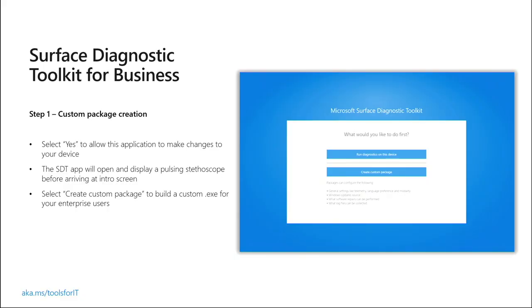If there's only a specific set of troubleshooting steps that you know or think you need to run, what's great about the SDT for Business is that we now allow you to create custom packages so that you can be very prescriptive with which troubleshooting steps you want to go through. You can create a custom executable to send out to end users so that when someone in accounting is having an issue with their Surface laptop, all you have to send them is this EXE and you'll get the reports back.